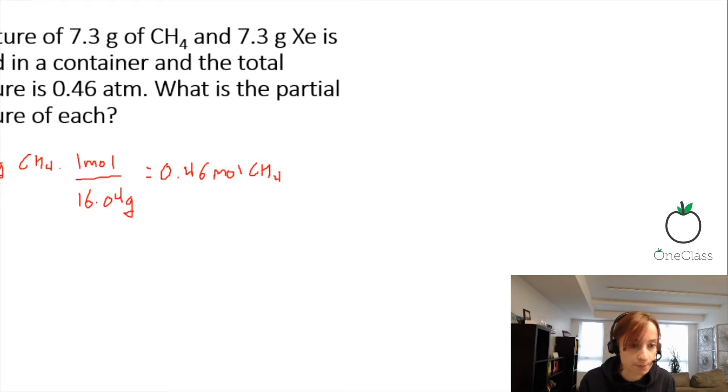Then, for 7.3 grams of xenon, its molar mass—it's just one element, so you can just look that up on the periodic table quickly—is 131.29 grams per mole, which gives you 0.055 moles of xenon.